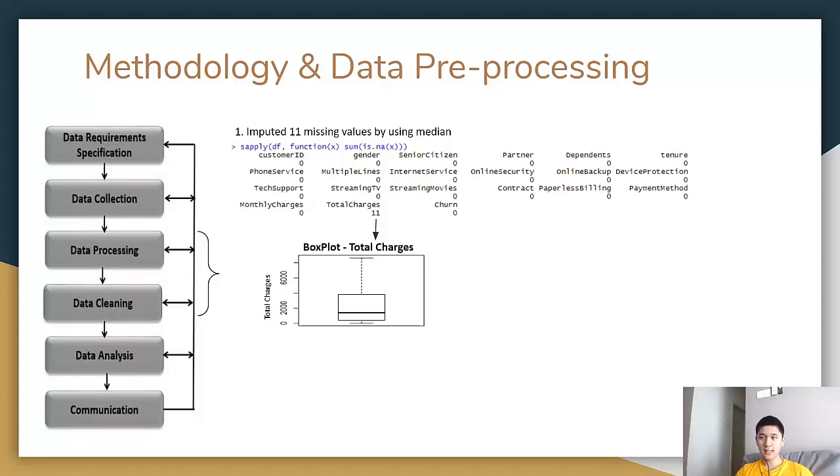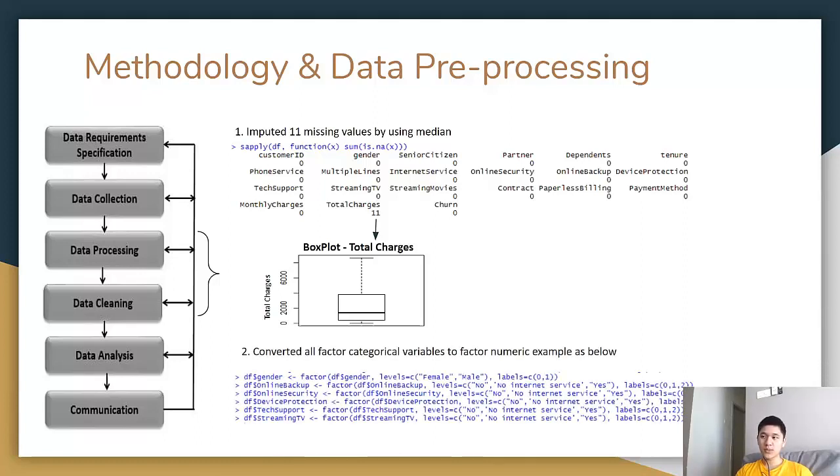Once all the data are clean, we then convert all the factor categorical variables to a standardized format, which is the factor numeric format. Below are the examples of how we transform the data into the factor numeric format. By transforming the data, it will help to ease the work in the data analysis, which will be presented by my team next.